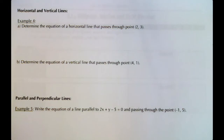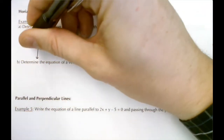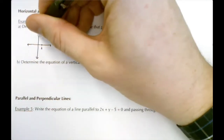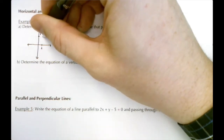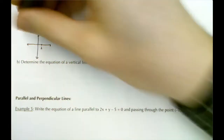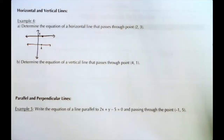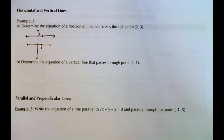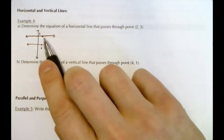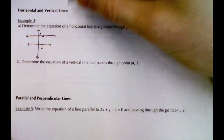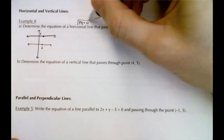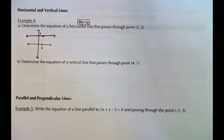In Example 4 we look at two special cases: horizontal lines and vertical lines. For part (a), determine the equation of a horizontal line that passes through the point (2, 3). Sketching that point, a horizontal line is flat. Since the slope has no rise — it's all run — the slope is zero. So for a horizontal line, m = 0.